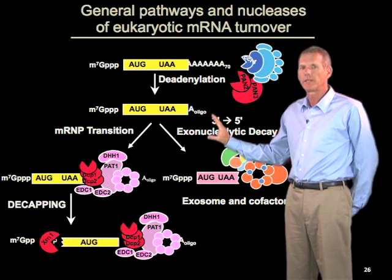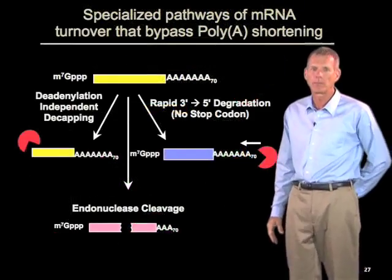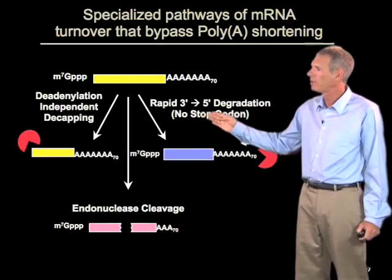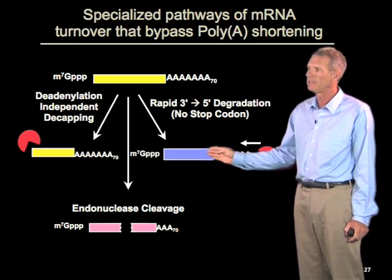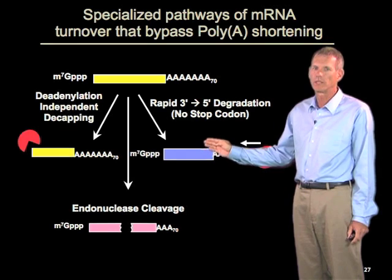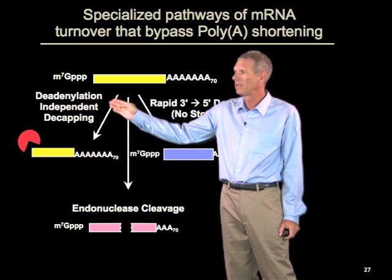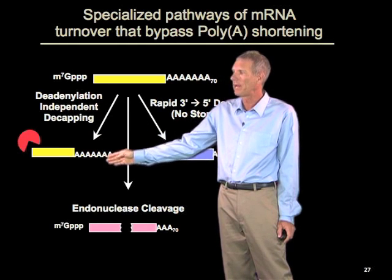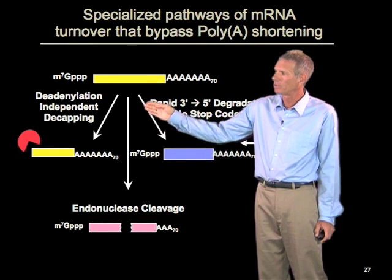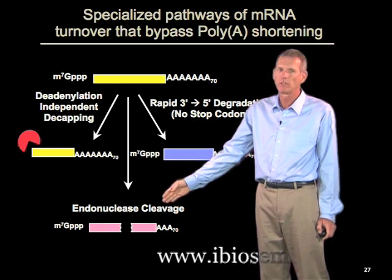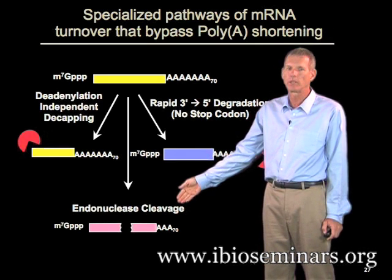There are also specialized pathways by which mRNAs are degraded. As another example of quality control, if mRNAs don't have a stop codon, they are recognized and degraded extremely rapidly from the 3' end without any deadenylation — a process called non-stop decay. Similarly, RNAs recognized as having nonsense codons, at least in simple eukaryotic cells, are subject to very rapid decapping, bypassing the normal step of deadenylation. A third and growing class of specialized RNA degradation events involves endonuclease cleavage, which tends to be targeted to specific subclasses of mRNAs that have specific sequences or elements which trigger cleavage.